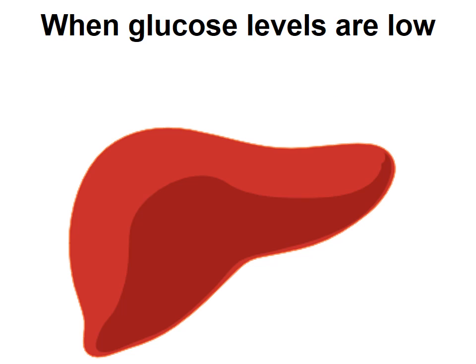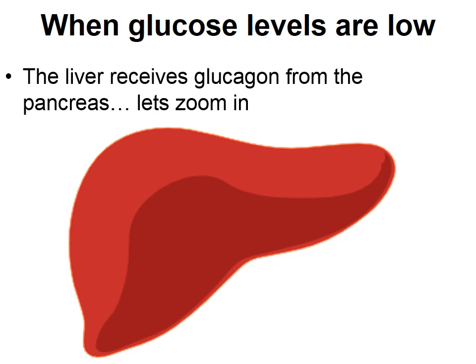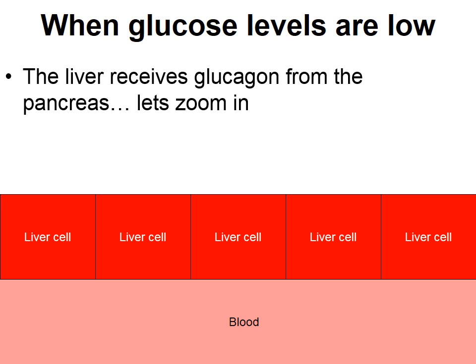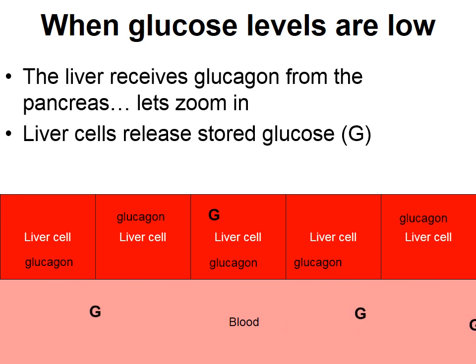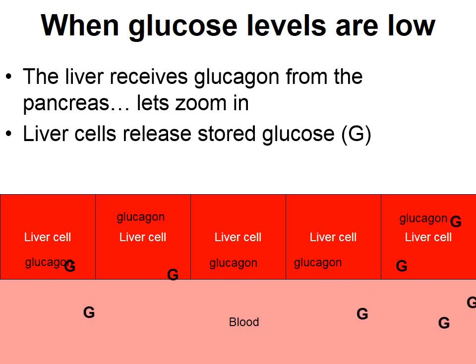When glucose levels are too low, the pancreas releases a hormone called glucagon. The liver receives glucagon from the pancreas and its cells respond by releasing stored amounts of glucose into the blood, bringing the low level back up to normal. So glucagon brings glucose levels up when they're too low, while insulin brings levels down when they're too high.